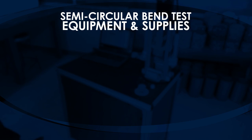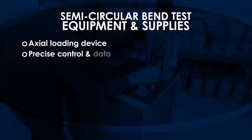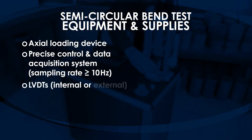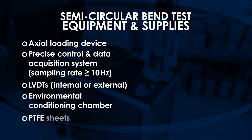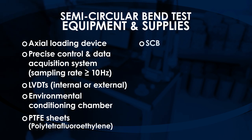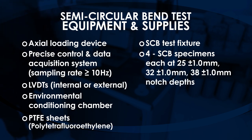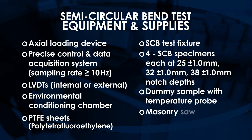Equipment and supplies for this test include an axial loading device, precise control and data acquisition system with a sampling rate of 10 Hz or more, LVDTs, environmental conditioning chamber, PTFE sheets, SCB test fixture, 4 SCB test specimens at each notch depth of 25 mm, 32 mm, and 38 mm, a dummy sample with temperature probe, and a masonry saw.